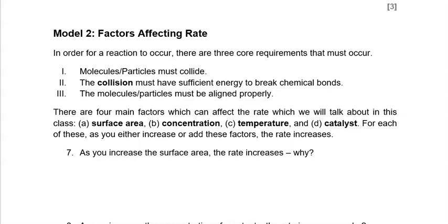In order for a reaction to occur, three things must happen. First, you must have molecules or particles collide. There must be a collision in order for something to happen. Because if there's no collision, there's no interaction between two species, and if there's no interaction, we're not going to get a reaction to occur.